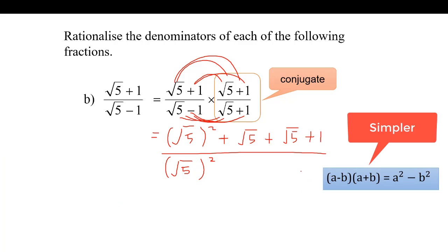So A minus B times A plus B is A squared, square root of 5 squared, minus B squared. So we have minus 1 squared. Minus 1 squared is actually minus 1.